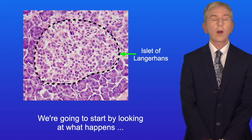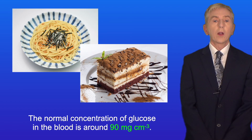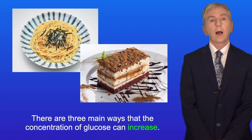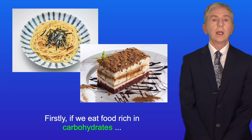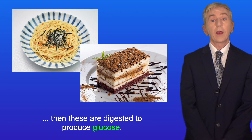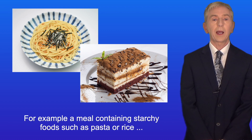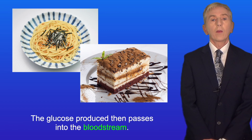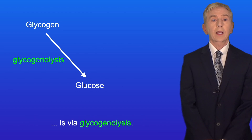We're going to start by looking at what happens when the concentration of glucose in the blood rises. The normal concentration of glucose in the blood is around 90 milligrams per centimeter cubed, and there are three main ways that the concentration of glucose can increase. Firstly, if we eat food rich in carbohydrates, then these are digested to produce glucose — for example, a meal containing starchy foods such as pasta or rice, or sugary foods such as cakes and sweets. The glucose produced then passes into the bloodstream.